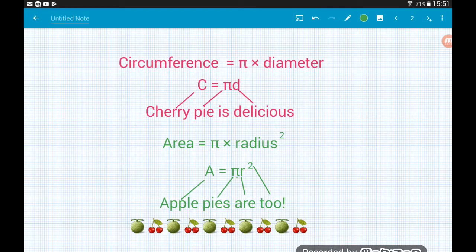The formula for the circumference: circumference is equal to pi times the diameter, C equals pi d. And the cheeky little sentence that we can use to help us remember that: cherry pie is delicious. C equals pi d, cherry pie is delicious.